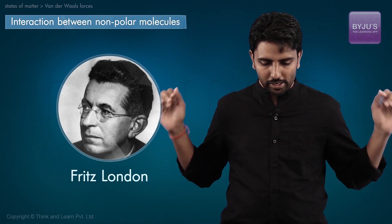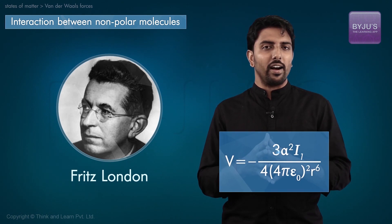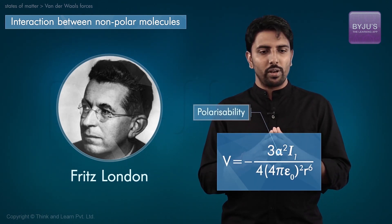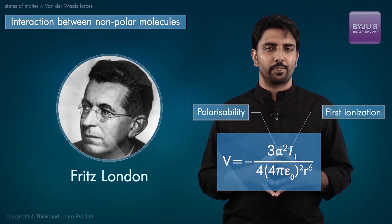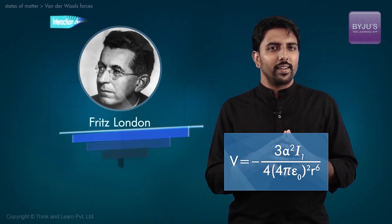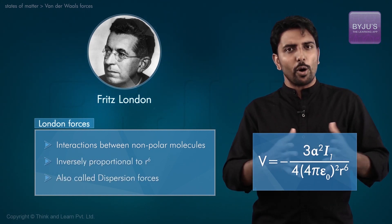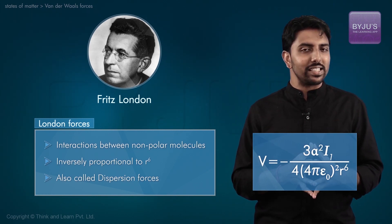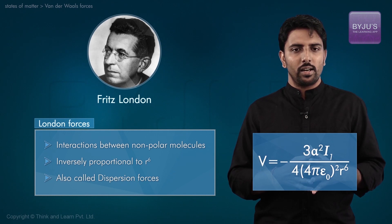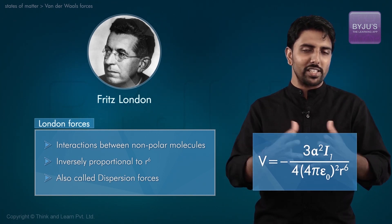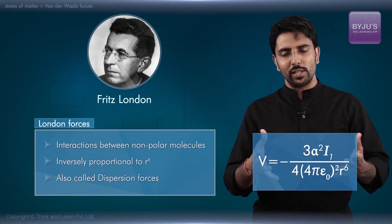In 1930, Fritz London, a German physicist, showed using quantum mechanics that the potential energy of interactions of two identical atoms or non-polar molecules is given by—Here, alpha is the polarizability of the atom or molecule and I_1 is the first ionization. The forces that arise from this type of interaction are also known as dispersion forces. Because the forces increase with increasing distance as r to the negative 6, these forces, known as London forces or dispersion forces, are also classified as van der Waals forces.